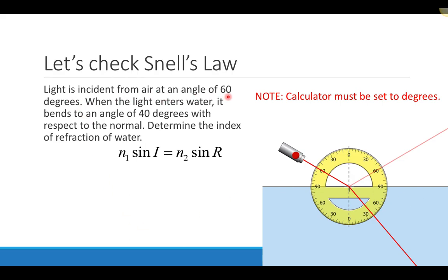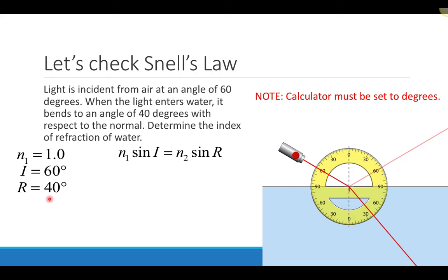Light is incident from air at an angle of 60 degrees. When it enters the water, it bends to an angle of 40 degrees with respect to the normal line. We want to determine the index of refraction of water. So we know: in region 1, light is traveling in air with an index of refraction of 1; the angle of incidence is 60 degrees; the angle of refraction is 40 degrees; and we want to find the index of refraction of region 2.